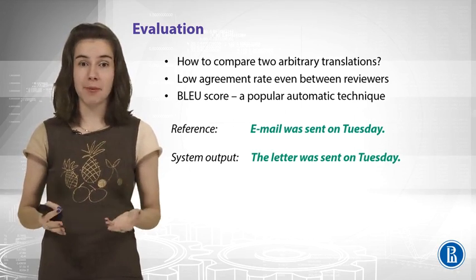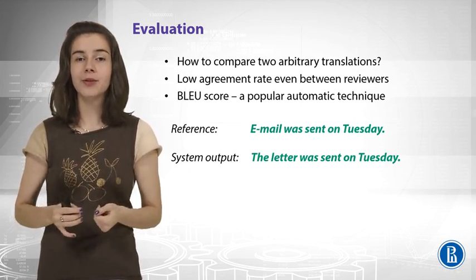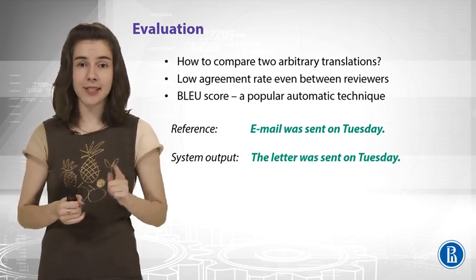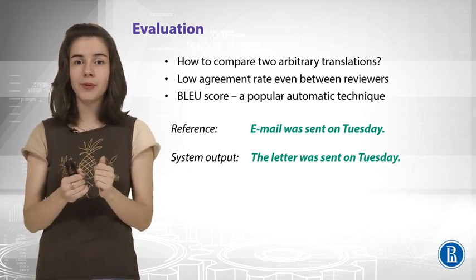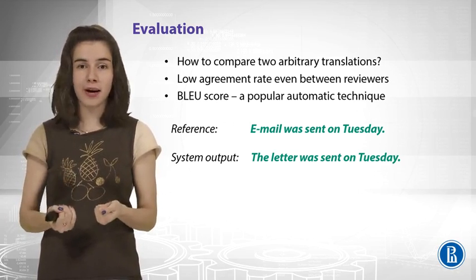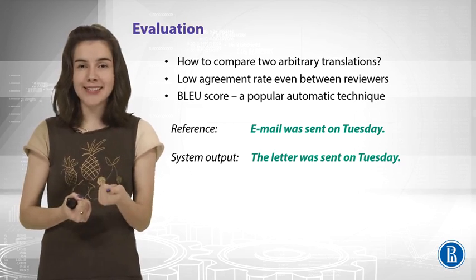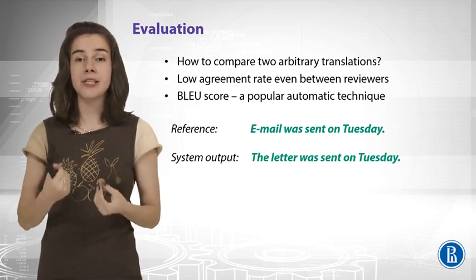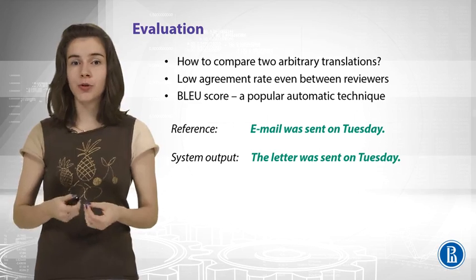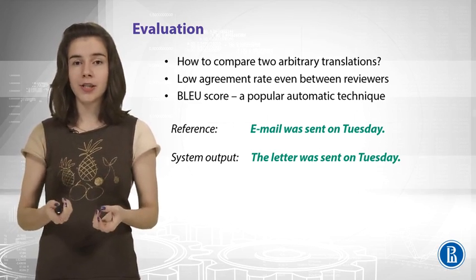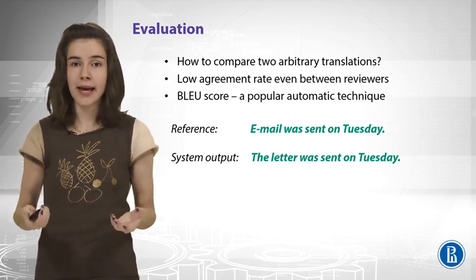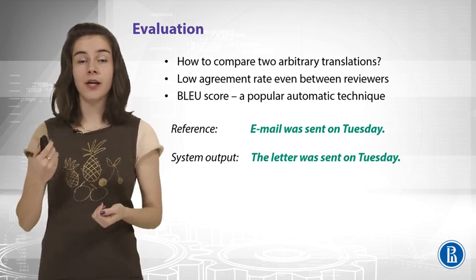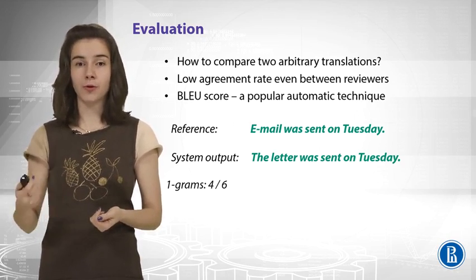Let me show you an example. You have a reference translation and the output of your system, and you try to compare them. We have the useful tool of n-grams — unigrams, bigrams, and trigrams. First, we compute unigram precision: you look at your system output, count the words, and compute how many of them actually occur in the reference. The unigram precision score will be four out of six.